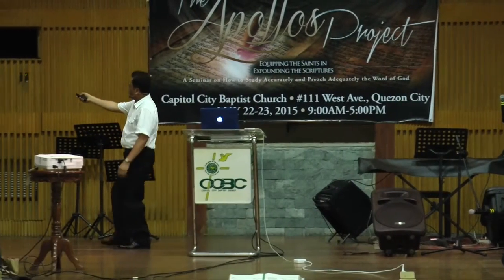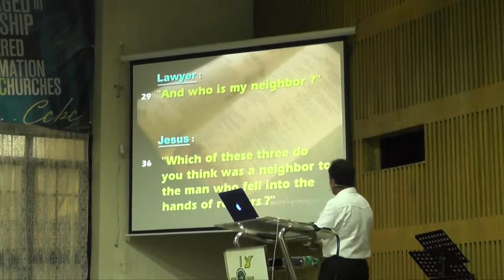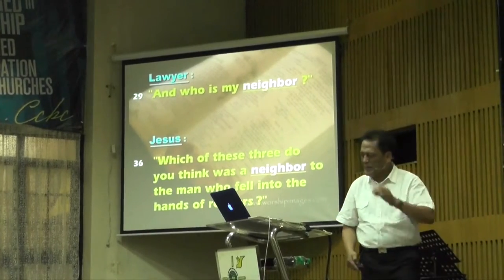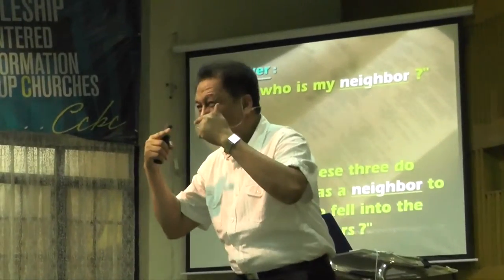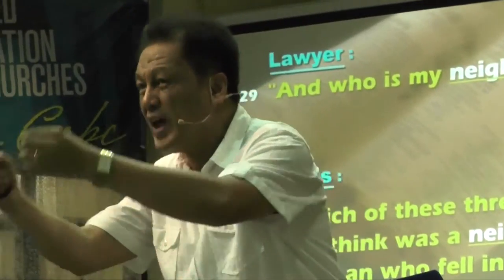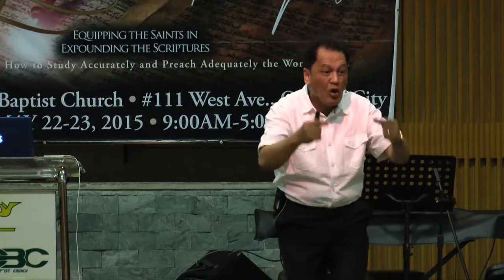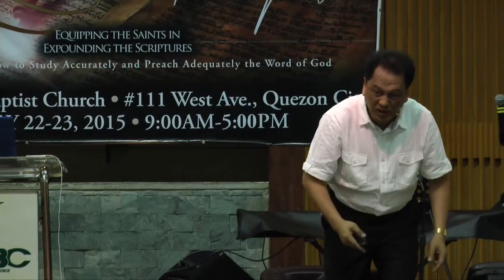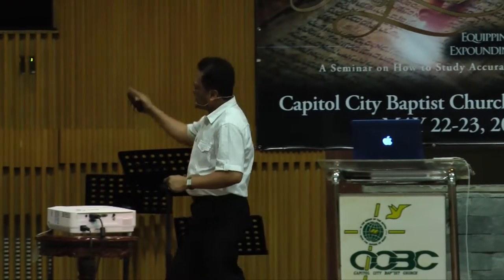He said 'Who is my neighbor?' and then 'Which of these three was a neighbor to the man who fell?' What is common is the word 'neighbor.' But we need to analyze: in the mindset of the lawyer, is the neighbor the person who needs help or the person who extends help? In the lawyer's question 'Who is my neighbor?' the neighbor he had in mind is the person who needs help — the one he would love.